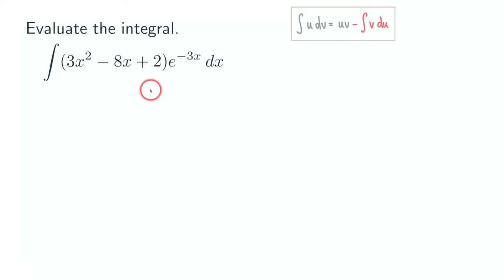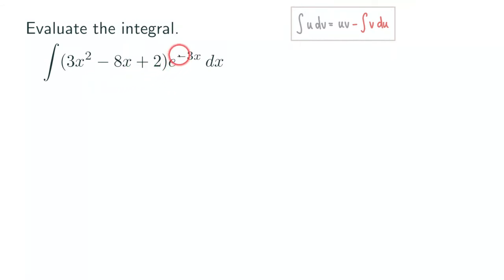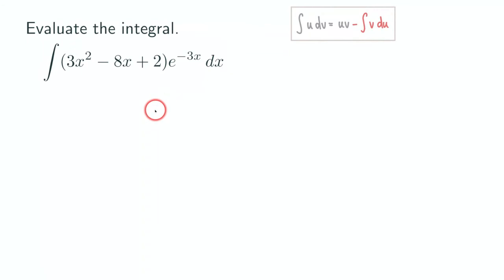Let's look at this function here. We have a polynomial times an exponential function, so this is not just a power function. We have a polynomial, 3x squared minus 8x plus 2, and then the exponential function is e to the negative 3x, where the exponent is a linear function.